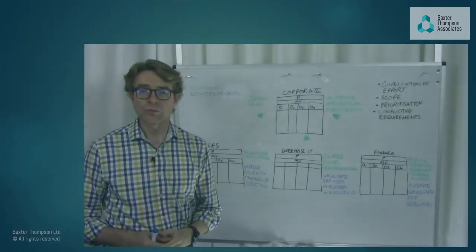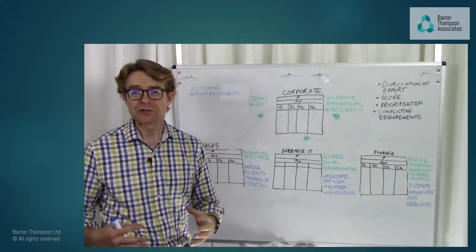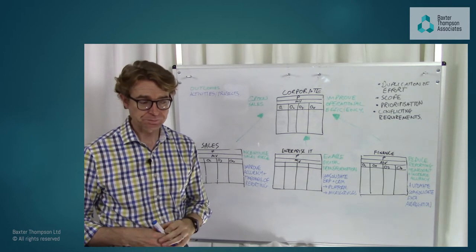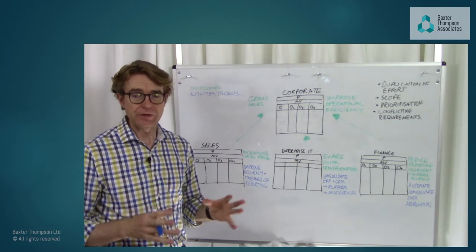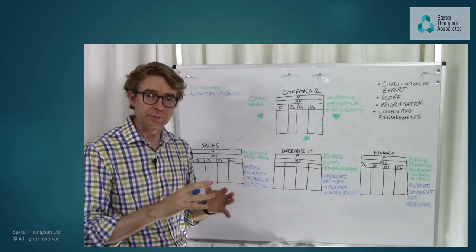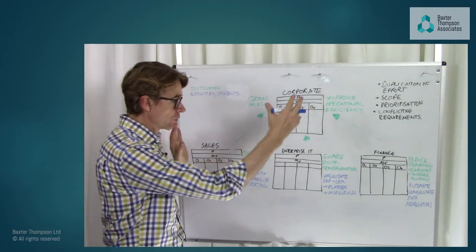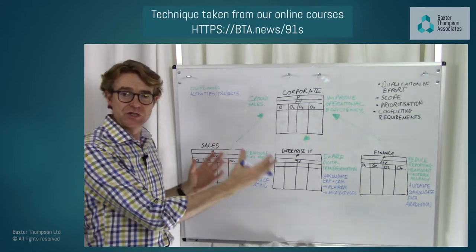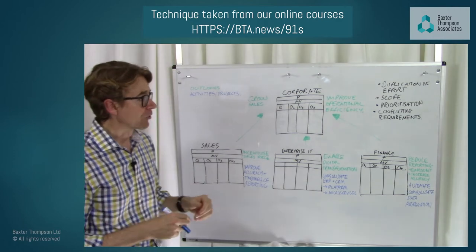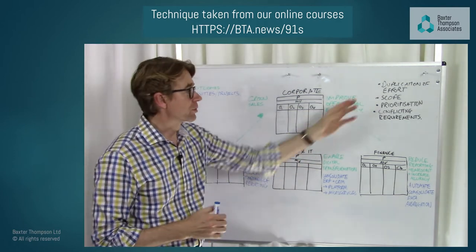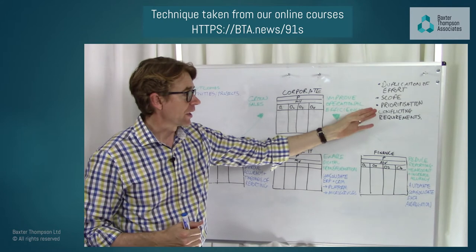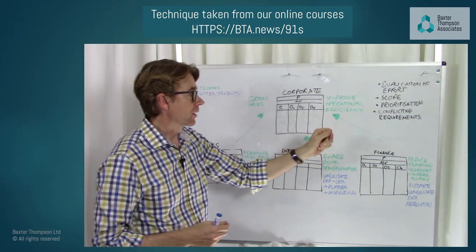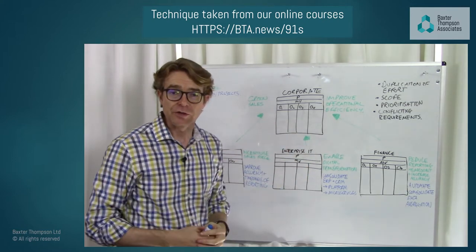Let's move into a practical example of how we can use strategy on the page to gain alignment across different functions. Assembling those different jigsaw pieces into one consistent picture that everybody can see helps appreciate the complexities involved and avoids duplication of effort, scope increase, improves prioritisation, and removes conflicting requirements.